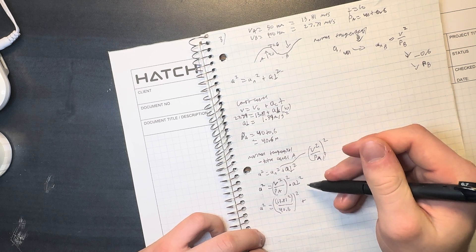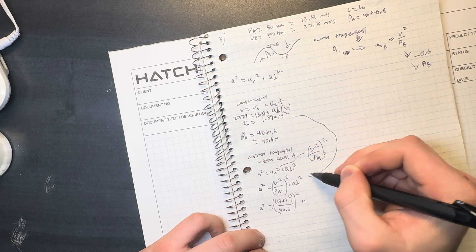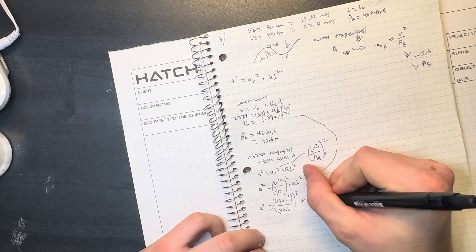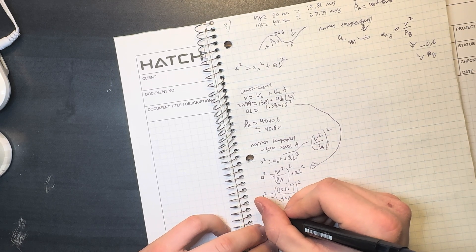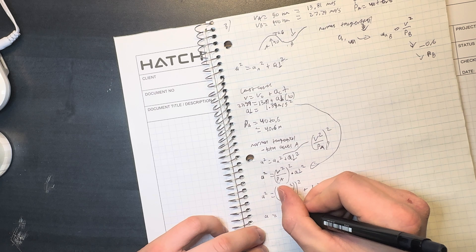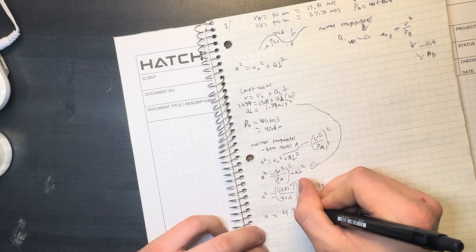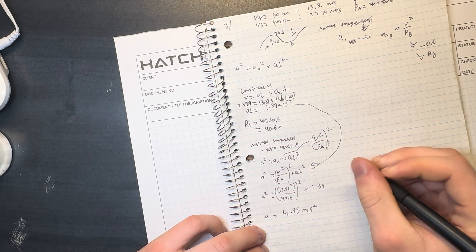Plus we solved for this, this is just 1.39. Okay, so this ends up with a is equal to 4.95 meters per second squared.